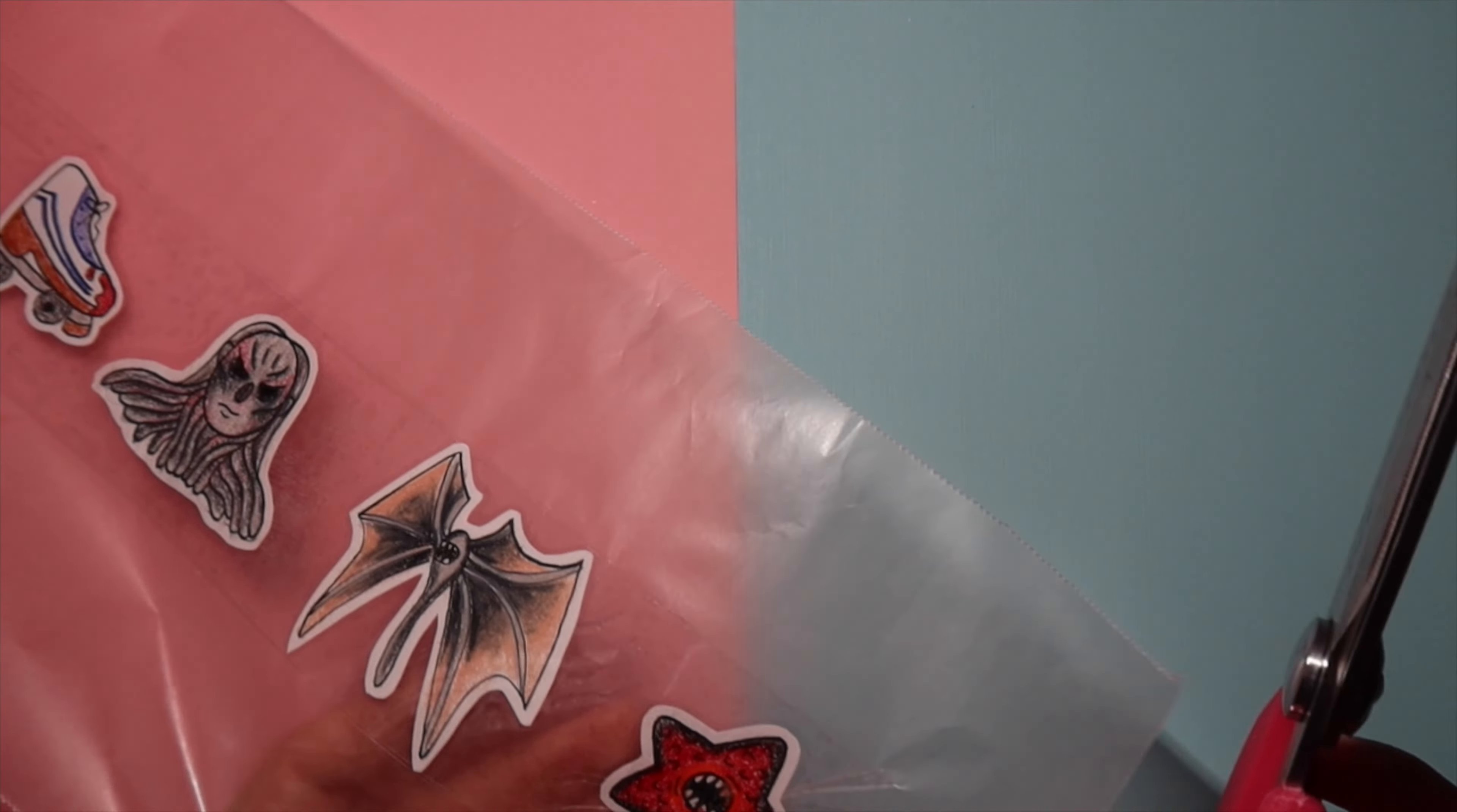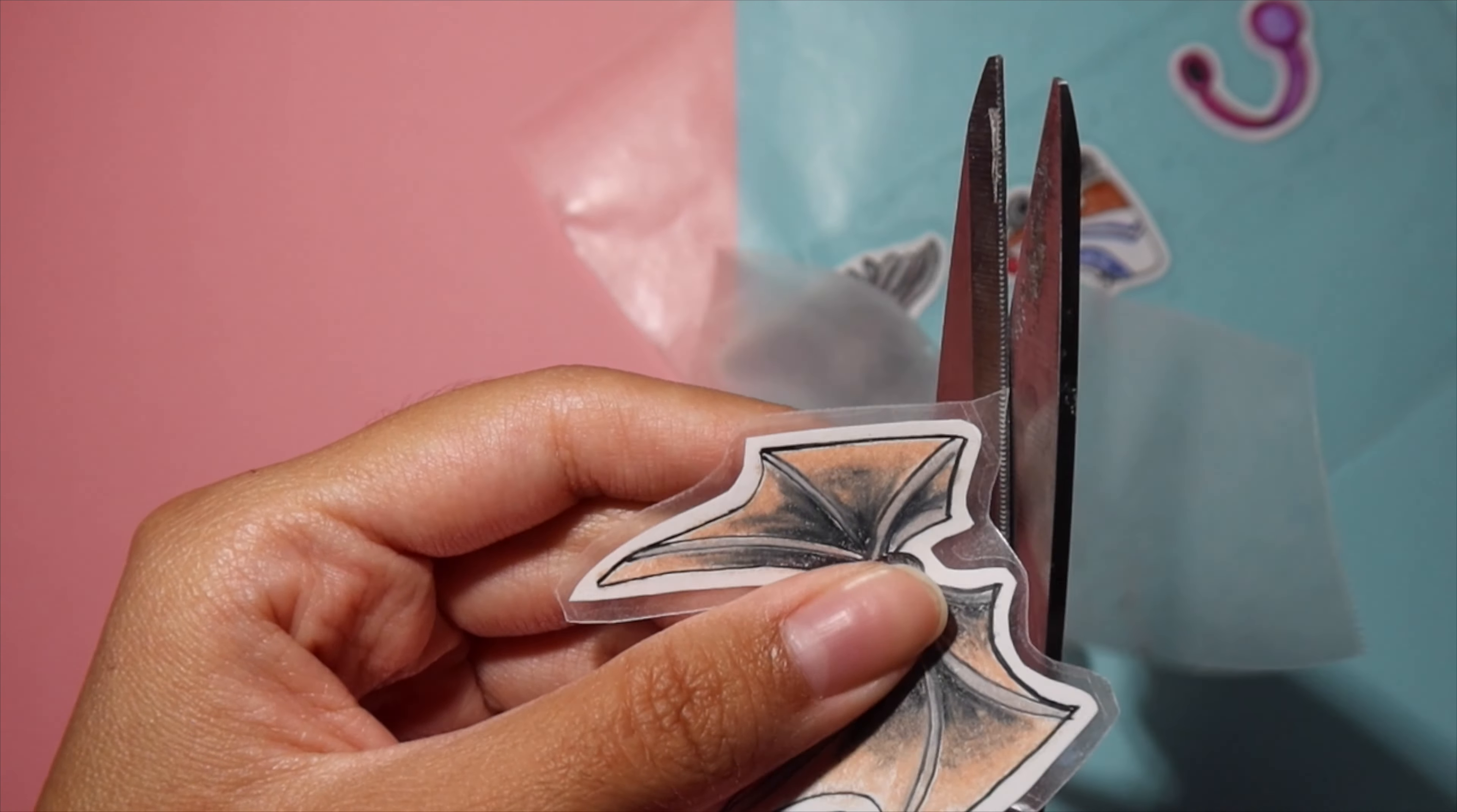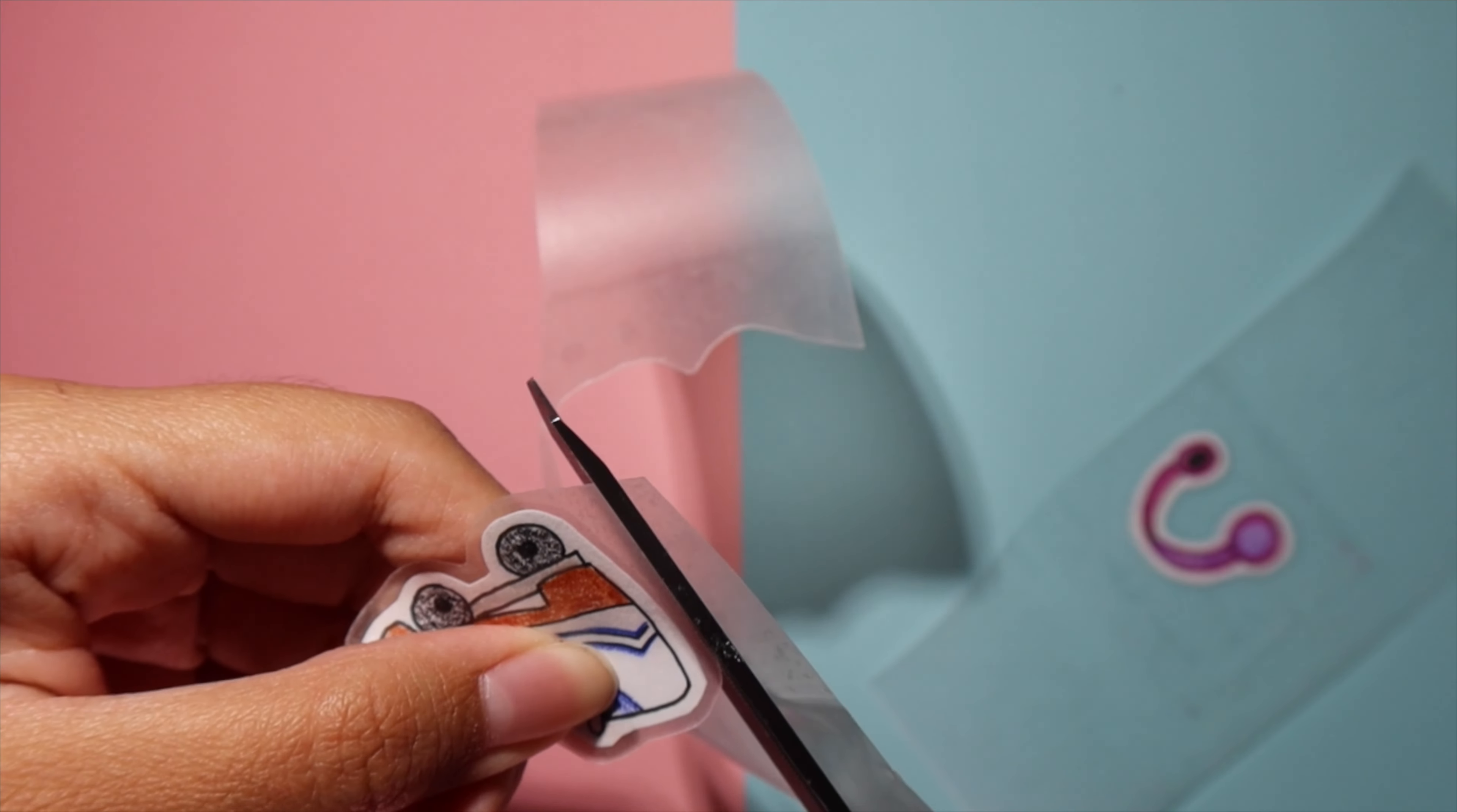The last step is to simply cut out all of your stickers with your scissors. Make sure you leave a border of tape around all of your stickers. This is what's going to make them stick. If you skip this step, your stickers will have nothing to help them be sticky and they're just going to be glossy images. So please use this step so that your stickers can work properly the way they're supposed to.